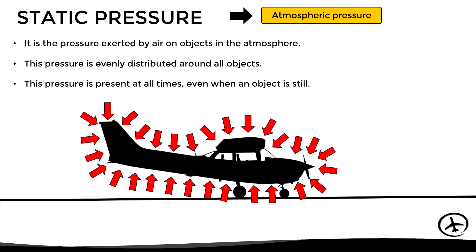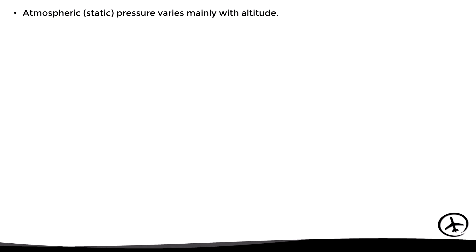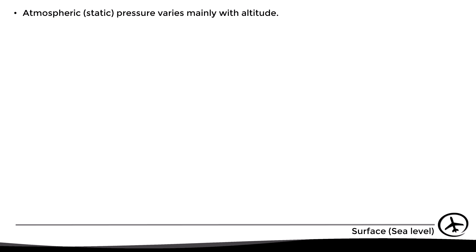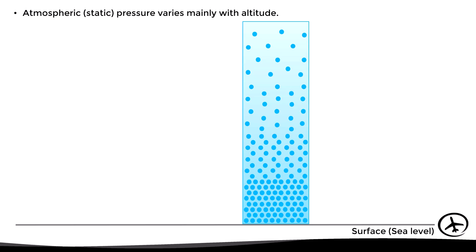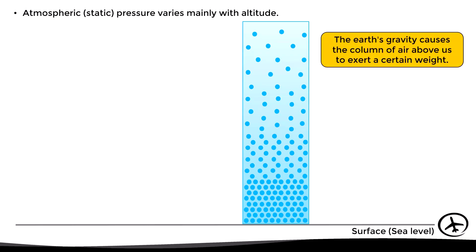This pressure is distributed evenly around all objects, and it is present at all times regardless of whether the object is stationary or moving. The atmospheric or static pressure varies mainly with altitude. Here we have the surface at sea level and a column of air above it that spreads up into the atmosphere. The air molecules are much closer together at the bottom near the surface, while as we go up they separate more and more. Gravity makes the column of air above us exert a certain weight, which causes the particles underneath to compress more — and this weight is precisely the static pressure.